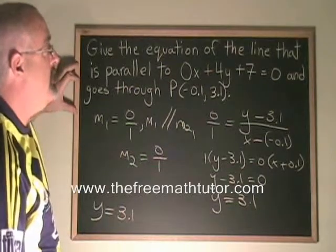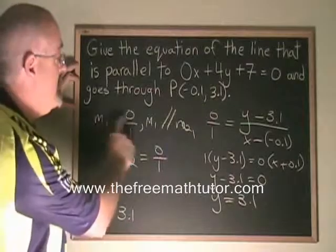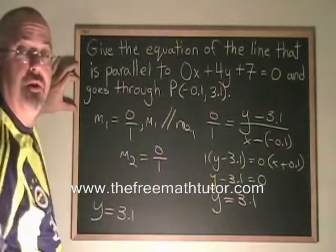This gives me the equation of the line that is parallel to this one and goes through this point, but it also allows me to show a justification, a proof, that this is really the equation that I was looking for.